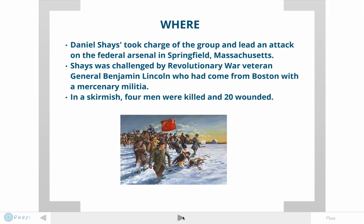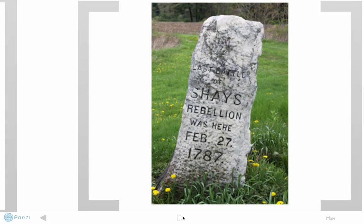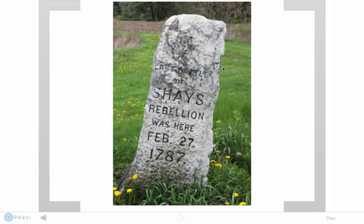Where did this take place? It mostly happened in western Massachusetts. Daniel Shays took charge of the group — he himself was a former soldier in the Revolutionary War. It happened in places like Springfield, Massachusetts, which is not far from where we are, in western Massachusetts, just north of where we live. Here is a marker in western Massachusetts that marks the last battle of Shays' Rebellion, which occurred on February 27th, 1787. The rebellion did not last long, was not successful, and was eventually ended by the government of Massachusetts.